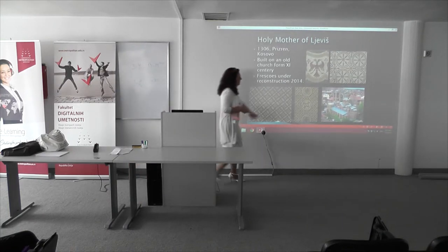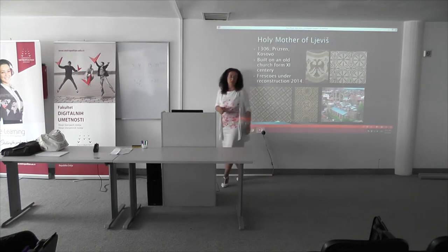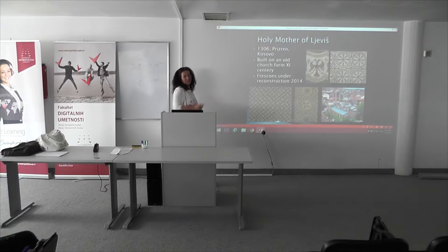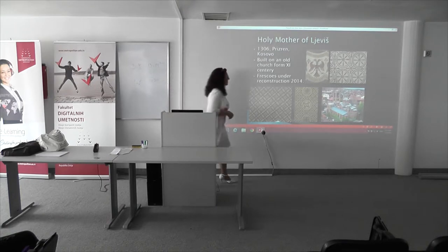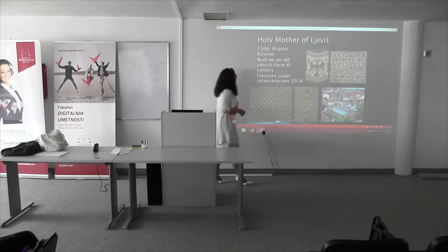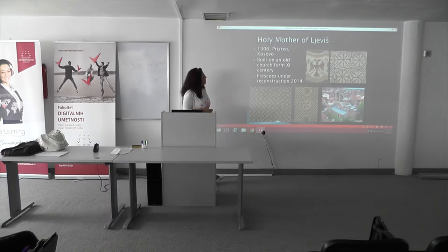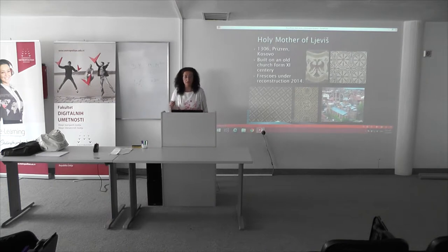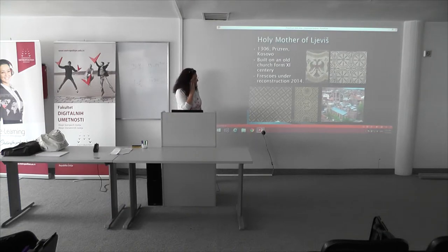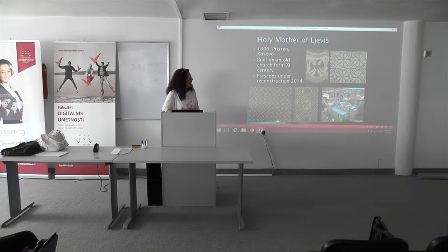The Holy Mother of Jeliš is my personal favorite. This motif was used as the symbol of the exhibition — it had two wings coming together, a very beautiful motif by itself. It is built on an old church dated to the 11th century. The Church of the Holy Mother of Jeliš was founded at the beginning of the 14th century and has many beautiful ornaments, roses in the front, and very unusual kinds of paintings, ornaments, and motifs.